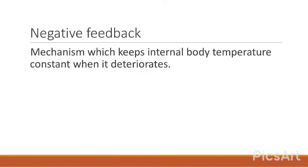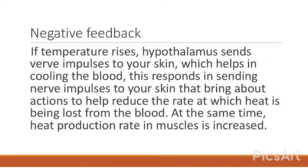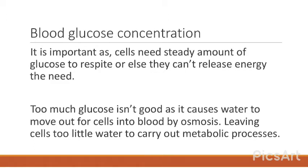Negative feedback keeps internal body temperature constant. If temperature rises, the hypothalamus sends nerve impulses to the skin to help cool the blood, bringing about actions to reduce heat loss. If temperature falls, nerve impulses increase heat production in muscles. In this way, temperature is always returned to the normal level — this is negative feedback.